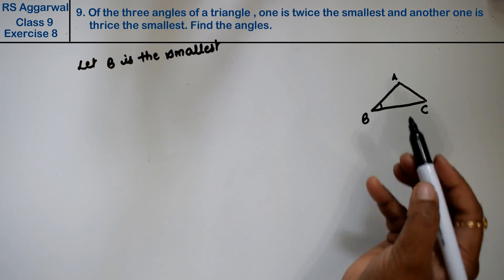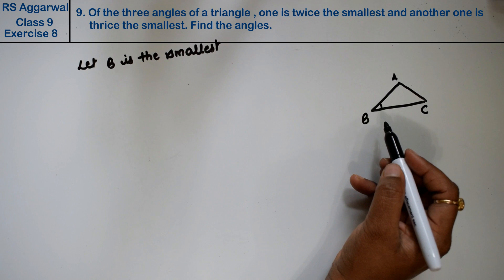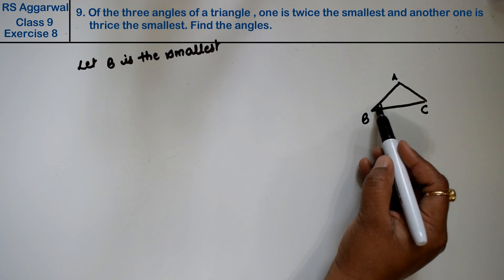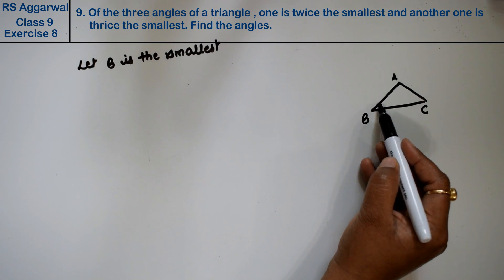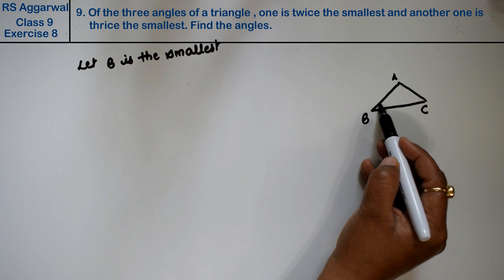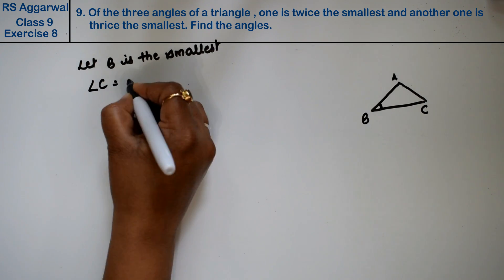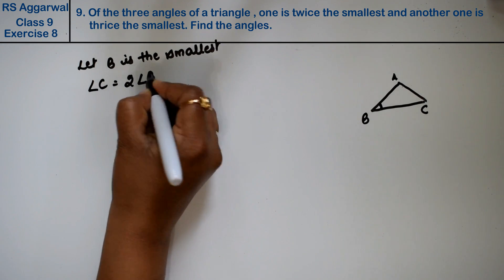Let's call angle B the smallest. The question says one angle is twice the smallest. So angle C equals 2 times angle B.